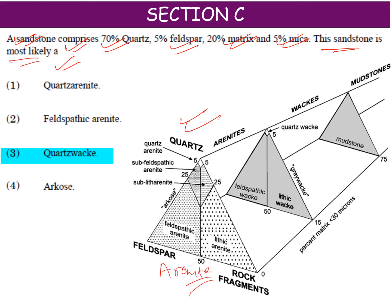The arenite diagram is given here. In the arenite diagram, if feldspar is between 90% and 70%, then you would classify it as feldspathic arenite. But here feldspar is only 5%, so feldspathic arenite will not be your answer. Coming to arkose: in arkose, quartz content is up to 55% and feldspar is around 30%. Here quartz is 70% and feldspar is 30%, so arkose is also not the answer.